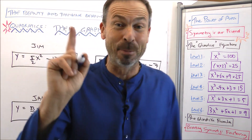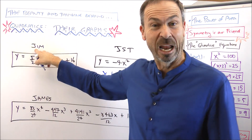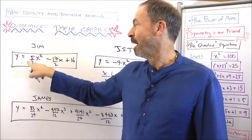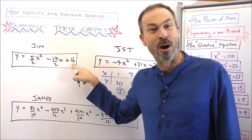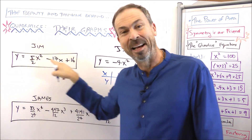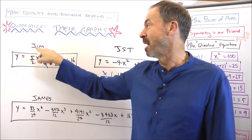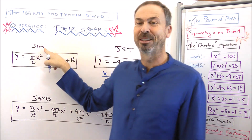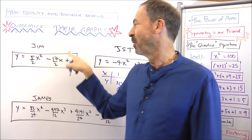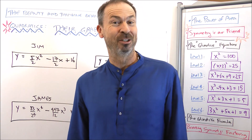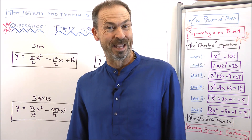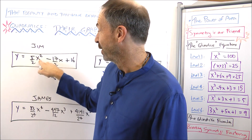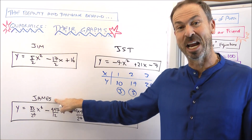A lot of people know me as Jim — the nickname for James. Put x equals 1 into this formula, out comes 10 for J. Put in x equals 2, out comes 9 for I. Put in x equals 3, out comes 13 for M. This quadratic actually spells Jim. And if you want to go further using higher powers of x, you can spell James.